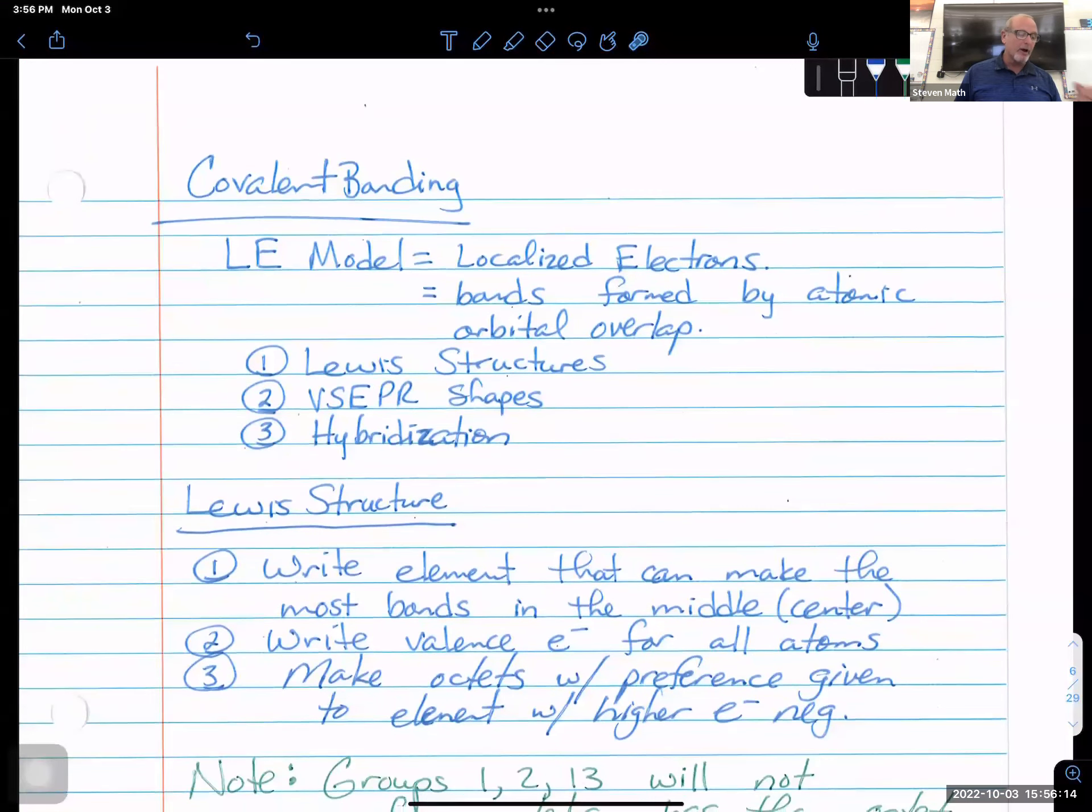And so what this is part of is a covalent bonding model that's called the LE model, the localized electron model. And these bonds are going to be formed by overlap of atomic orbitals. So all those 1s2, 2s2, 2p6, 3s2, 3p6, those orbitals are now overlapping between, in the last case, between a chlorine atom and a hydrogen atom. And that overlap is what causes the bond, an attraction from an electron in one to a nucleus in another, and vice versa. And that attractive force is what forms a covalent bond.